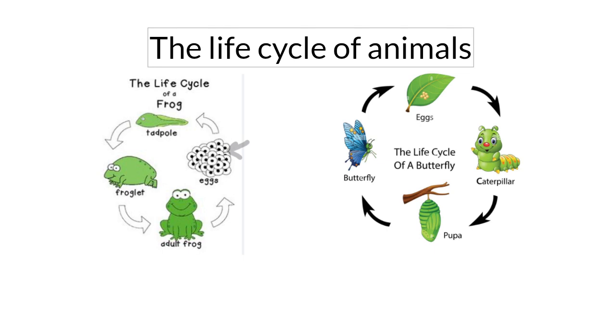Then the tadpole grows and becomes a froglet. Then the froglet grows and becomes an adult frog. We call this process the life cycle of a frog. Now let's move to the life cycle of a butterfly.